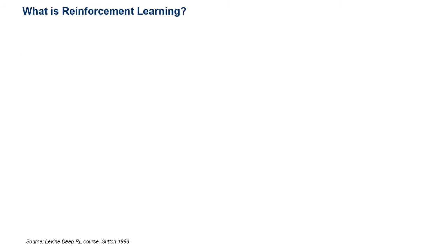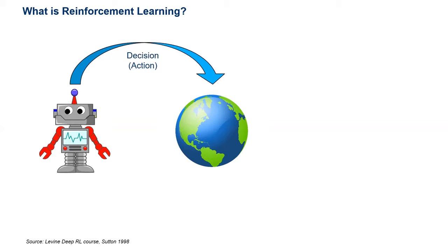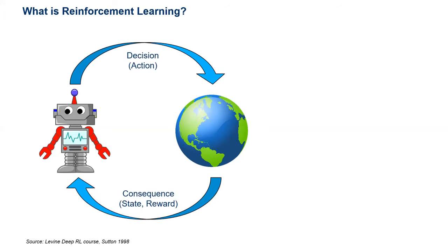I assume not everybody here is familiar with reinforcement learning, so I'll briefly describe what it actually is. Basically, we have an agent and an environment. The agent interacts with the environment — this is a problem of learning from interaction. The agent interacts in discrete time steps and receives some kind of representation of a state. In response to that state, the agent decides something — it makes a decision, takes an action — and then the environment responds back with the consequence of that action.